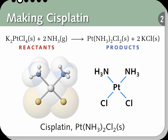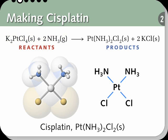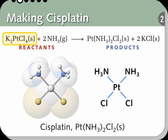Let's say that we want to make cisplatin, a platinum-containing compound that is used to treat certain cancers. To make cisplatin, we mix a platinum chloride with ammonia. The platinum chloride is quite expensive, so if we're going to use it in a reaction, we want to make sure we use all of it. Therefore, we mix a small amount of the expensive platinum compound with a large amount of inexpensive ammonia. The platinum salt is the limiting reactant.